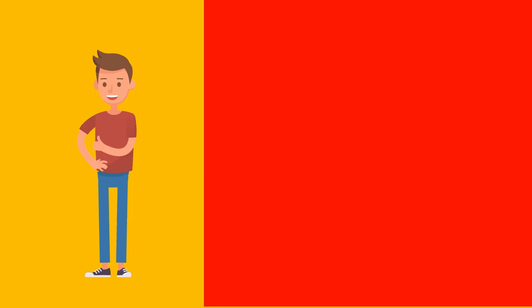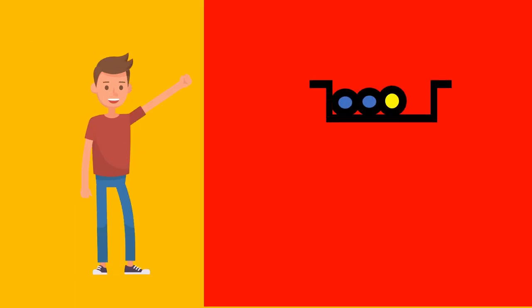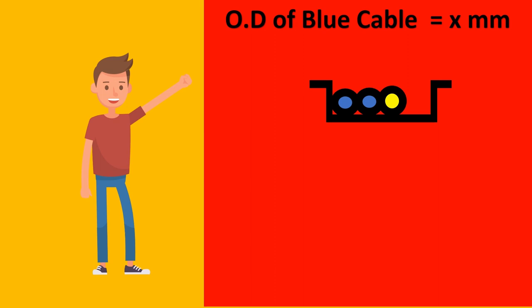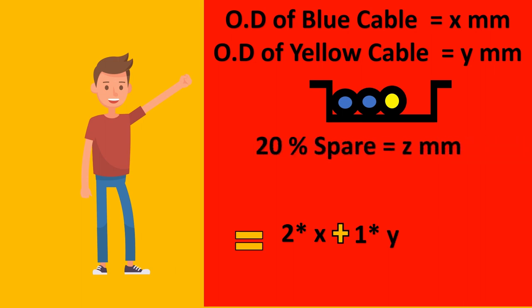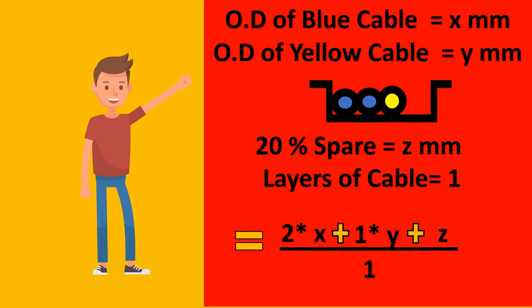Now let's see if Elon understood. It seems he needs an equation. Here's your cable tray: let the OD of the blue cable be X mm and the OD of the yellow cable be Y mm. The calculation is: (2X + Y + Z) / number of layers, where 2X represents two blue cables, Y represents one yellow cable, and Z is the spare capacity in mm. If there is one layer, you divide by one; for two or three layers, divide by two or three accordingly.